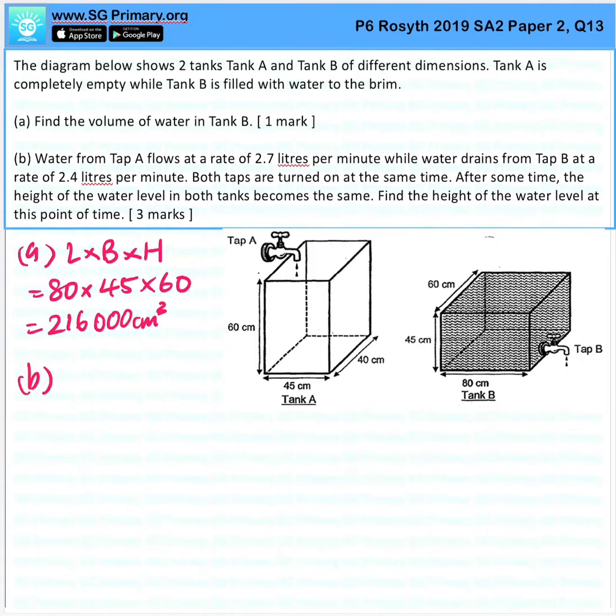Water from tap A flows at a rate of 2.7 litres per minute, while water drains from tap B at a rate of 2.4 litres per minute. Both taps are turned on at the same time. After some time, the height of the water level in both tanks becomes the same. Find the height of the water level at this point of time.